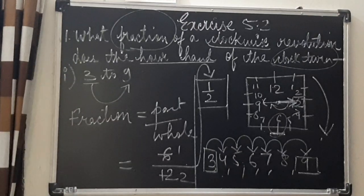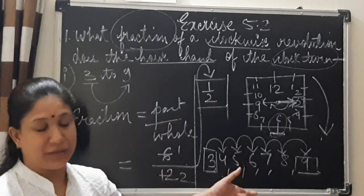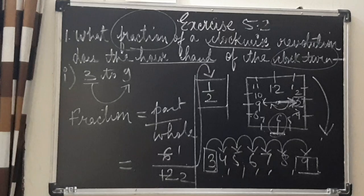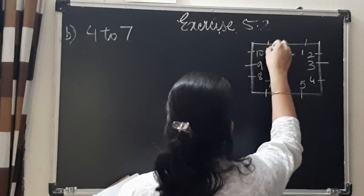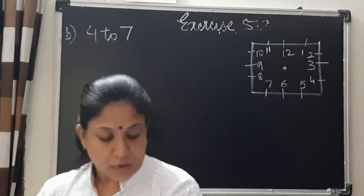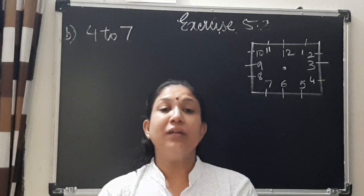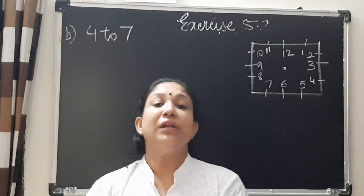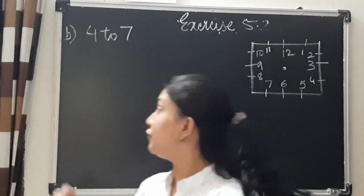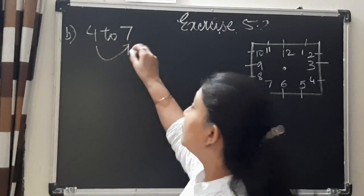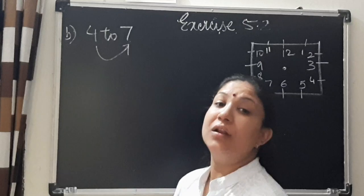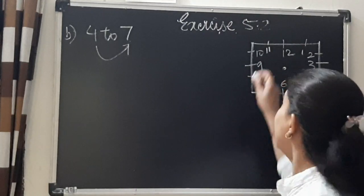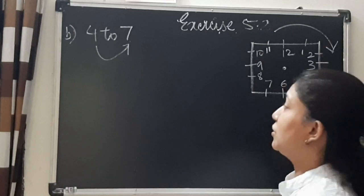Copy the solution. Do write down this on the rough side so you know how you got 6. Now let us see the second part. It is given in the same question that if the hour hand starts from 4 and moves to 7. Tell what will be the fraction if it is moving in clockwise direction.